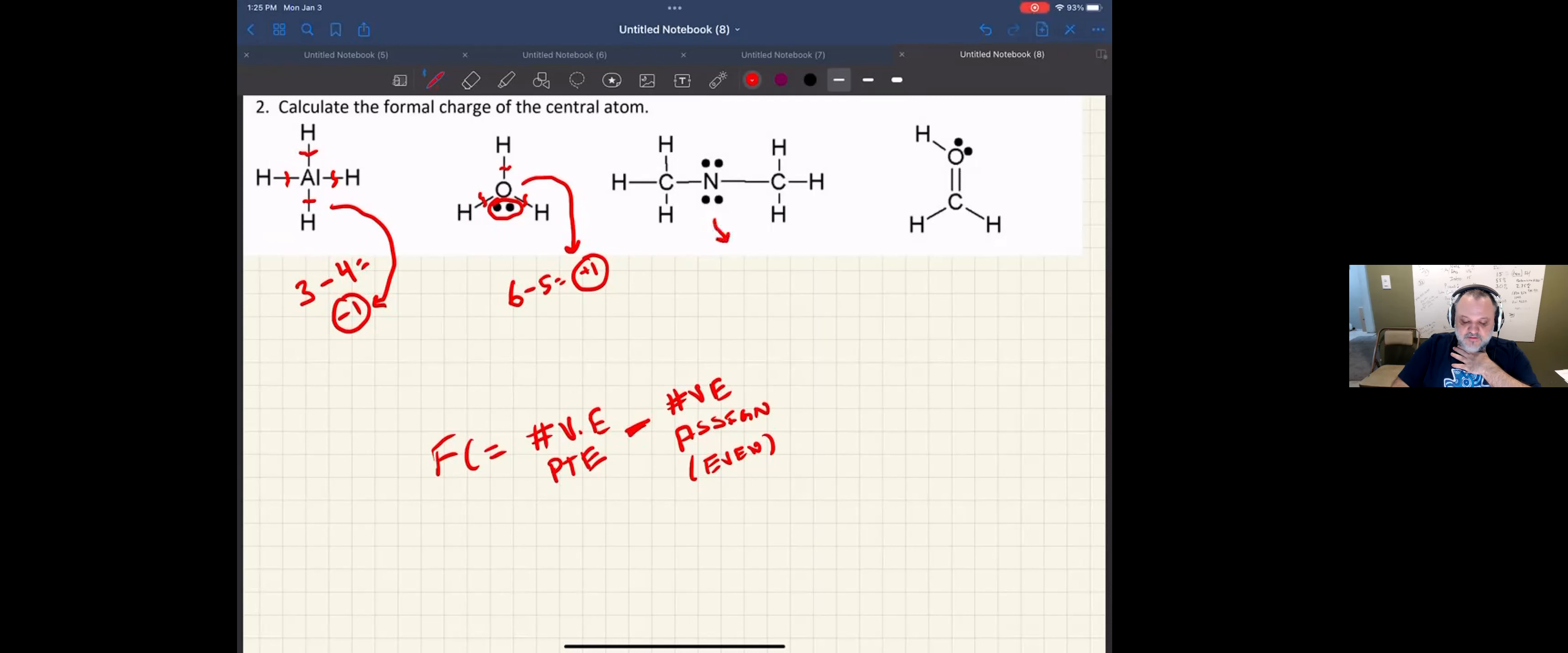Okay, the same thing for nitrogen, group 15. So I would give it five from the periodic table of elements. I'll assign it one, two, three, four, five, six from the structure. So that's minus one formal charge for nitrogen.